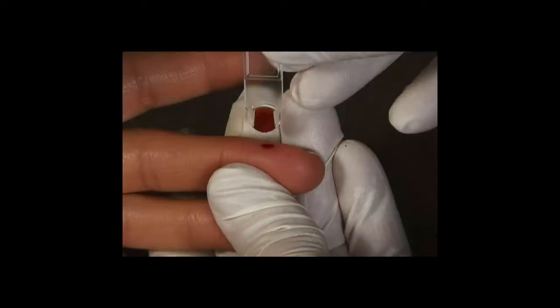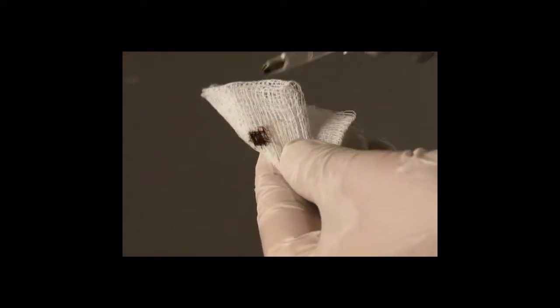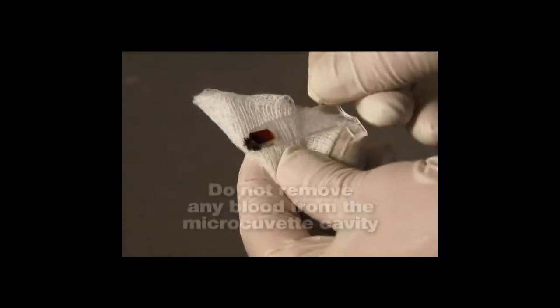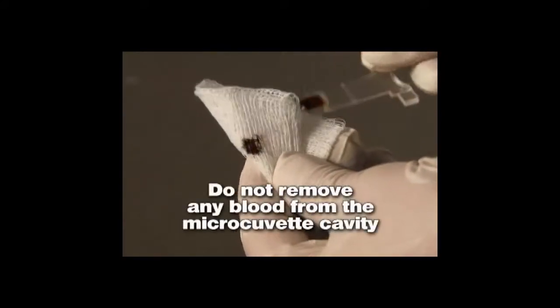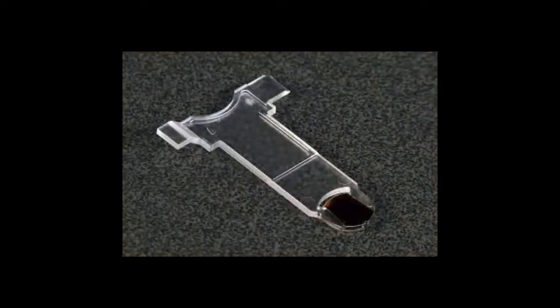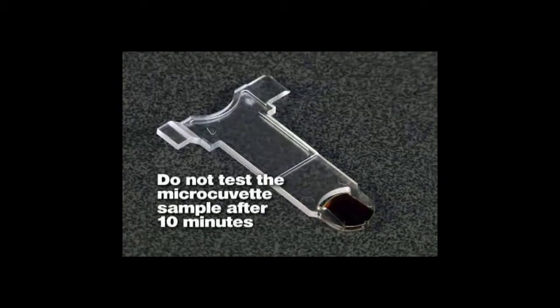In order to avoid contamination of the cuvette holder, remove excess blood from the outside of the micro-cuvette by carefully wiping off with a gauze or lint-free tissue. Remember, do not remove any blood from the micro-cuvette cavity. The micro-cuvette sample can now be tested immediately or within 10 minutes. Do not test the micro-cuvette sample after 10 minutes.